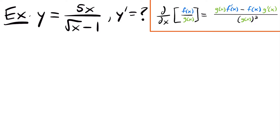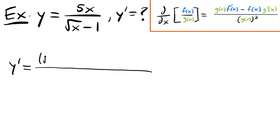Next, let's look at the derivative of y equals 5x divided by the square root of x minus 1. We want to know y prime, which is the derivative in this case. We have to use our quotient rule because we have a function 5x divided by another function, the square root of x minus 1. So 5x would be our f of x, and the square root of x minus 1 would be our g of x. We'll have that y prime is equal to our denominator function, square root of x minus 1, multiplied by the derivative of our top function, which is just going to be 5 since the derivative of 5x is 5.